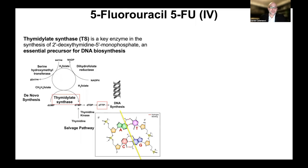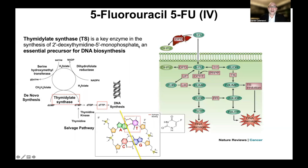Thymidylate synthase (TS) is an important enzyme that helps create the building block necessary for the base thymine. It produces a compound called dTTP, which is an important component to make thymine into DNA. 5-fluorouracil (5-FU) is a chemotherapy drug administered IV that comes through the bloodstream into each cell, passes the cell membrane, and gets converted through enzymes to its active products. These active products inhibit thymidylate synthase so you don't get enough dTTP, and therefore the cell can't have that building block to make DNA. It also gets incorporated directly into the DNA and causes damage.